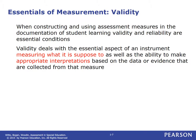Whenever we create an assessment, there are a couple of issues you need to understand. One of those is validity. When we talk about validity, it determines the essential aspect of an instrument measuring what it is supposed to, as well as the ability to make appropriate interpretations based on our data or evidence. Validity basically says: does this assessment measure what I want it to measure? And validity is always open to appropriate interpretations — if I use the results of an exam, even a valid exam, for something it was not designed for, my results and interpretations become less valid.